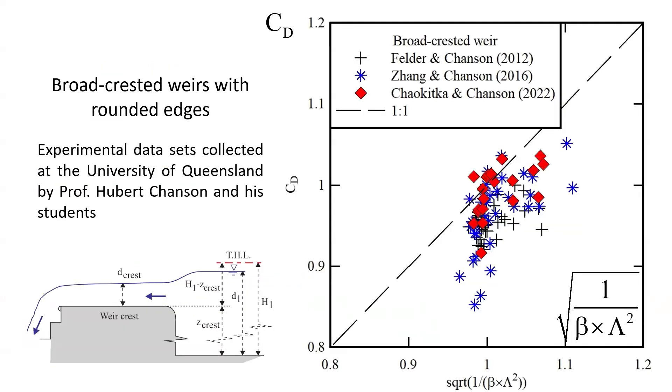One may compare the ideal fluid flow solution on the horizontal axis to the real fluid flow discharge coefficient on the vertical axis, with data shown here for broad-crested weirs with rounded edges, showing that for real fluid flow, the discharge coefficient is less than the theoretical solution.